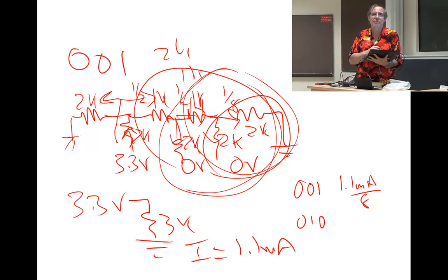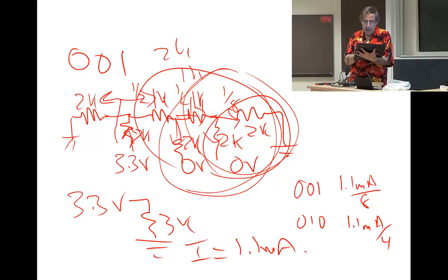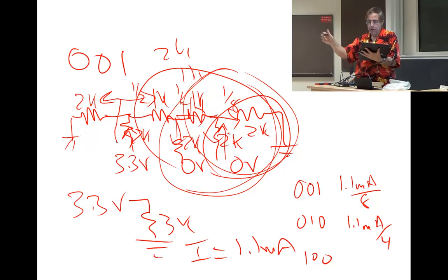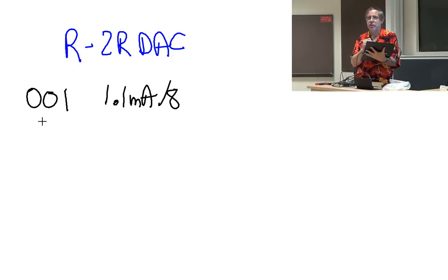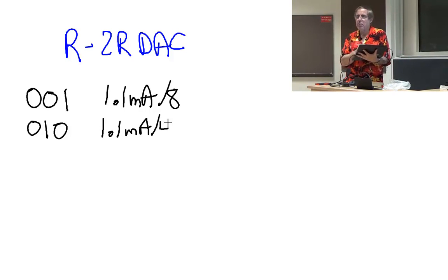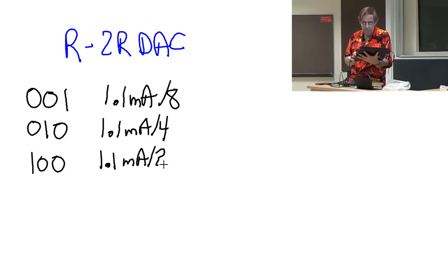For the middle bit (0-1-0), the circuit is symmetric and still gives 3k to ground, but the current only divides in half twice, giving 1.1 mA over 4. For 1-0-0, the current only divides once, giving 1.1 mA over 2. The further a bit is from the output, the more times it divides by one-half — that's the exponential relationship. This is a very common and effective way to build a DAC.